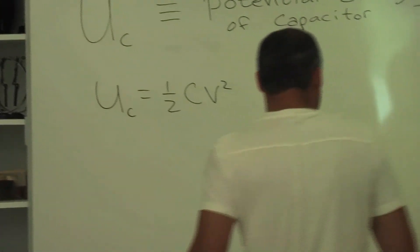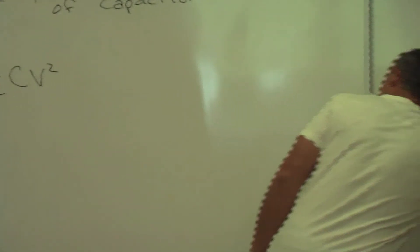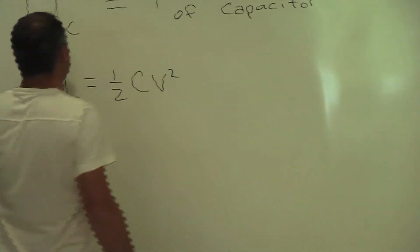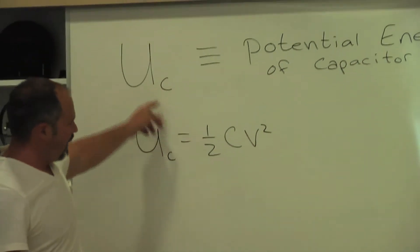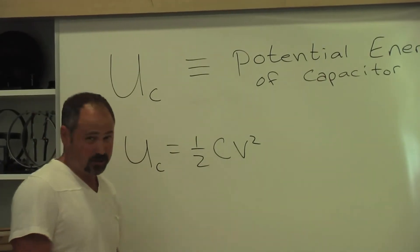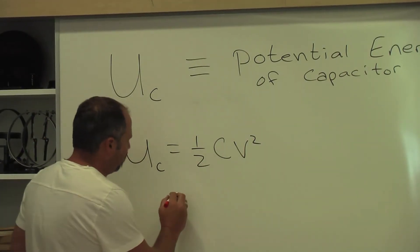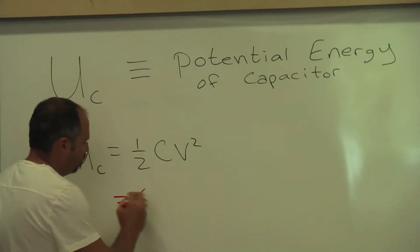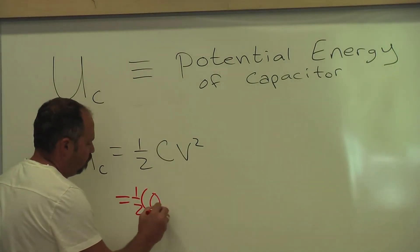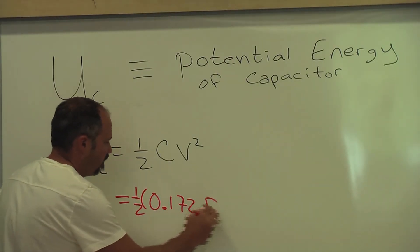Great, let's talk about how much energy is being stored in that capacitor. Here's our formula: potential energy of a capacitor is one half times the capacitance times the voltage squared. We have one half, 0.172 farads.